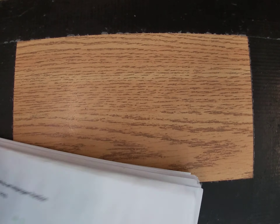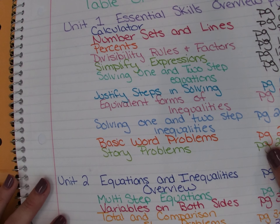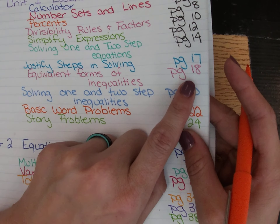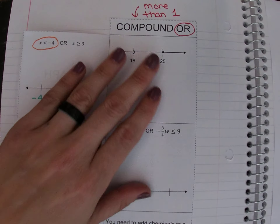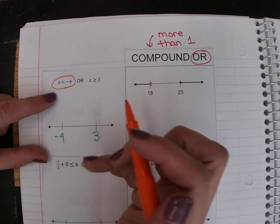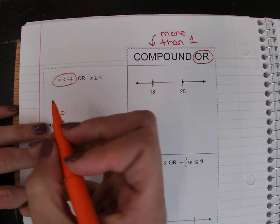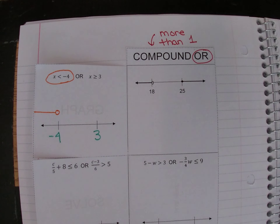If you forget how to graph inequalities, we'd look up in our table of contents — when we first talked about inequalities, that was on page 18. So if you need to go back to page 18 to remind yourself how to graph, you can do that. Following our normal rules, this is an open circle at negative four because there's no line underneath it, and it tells me I want to shade to the left. Notice I'm graphing above the number line, not on it.